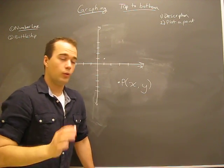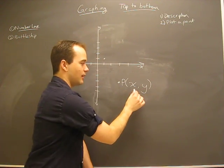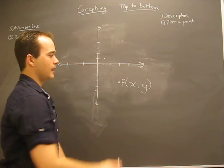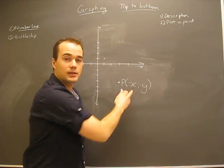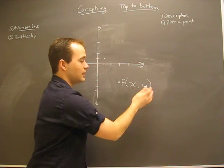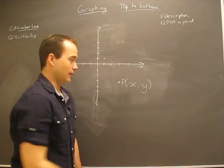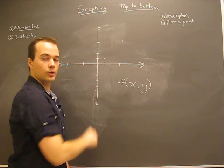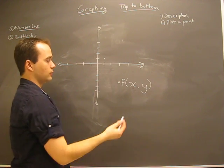Remember, 100% of the time, it's always the x value, then the y value. This can be positive or negative, this can be positive or negative. It all depends on where the point is.